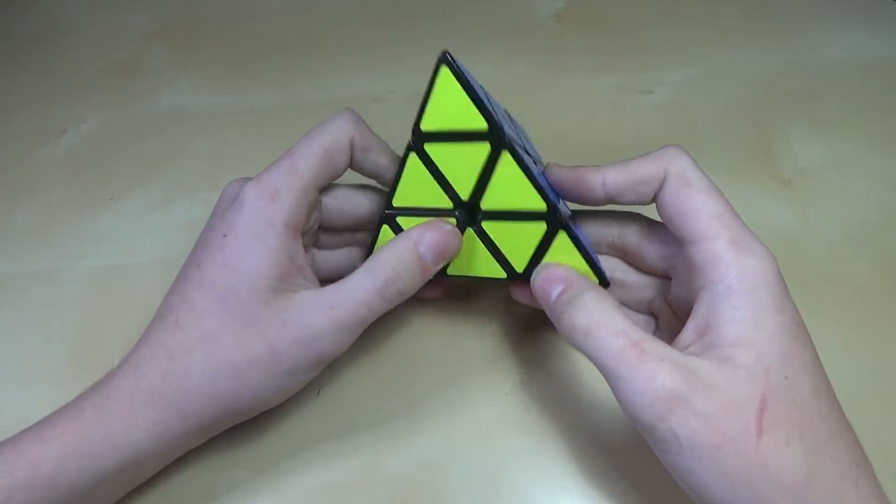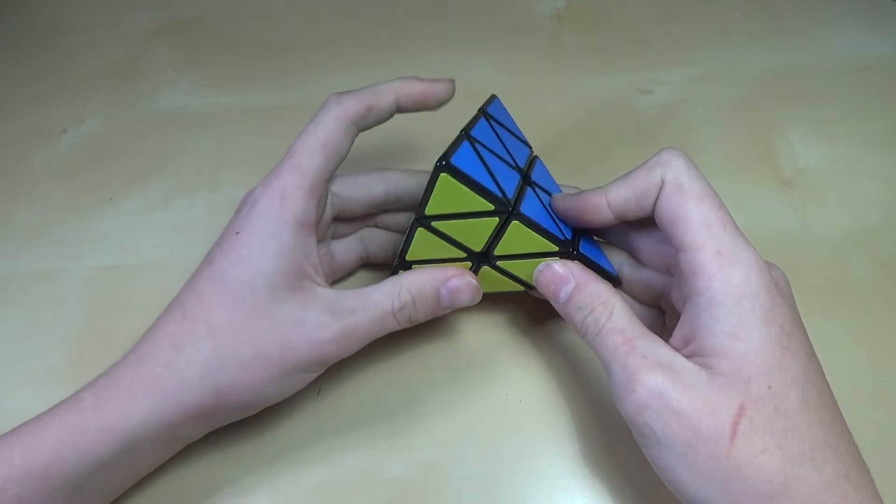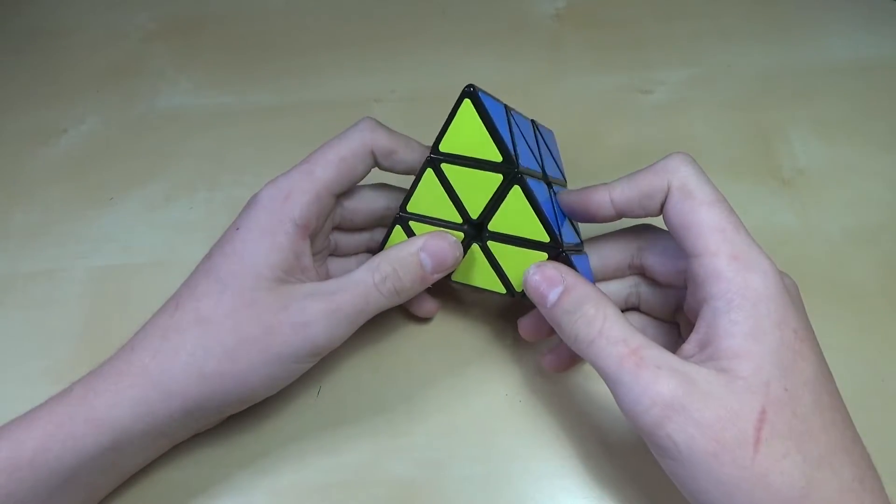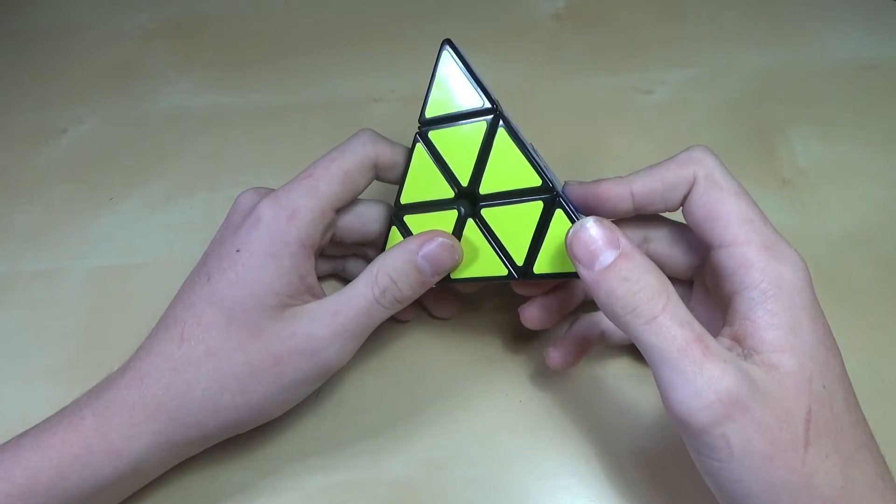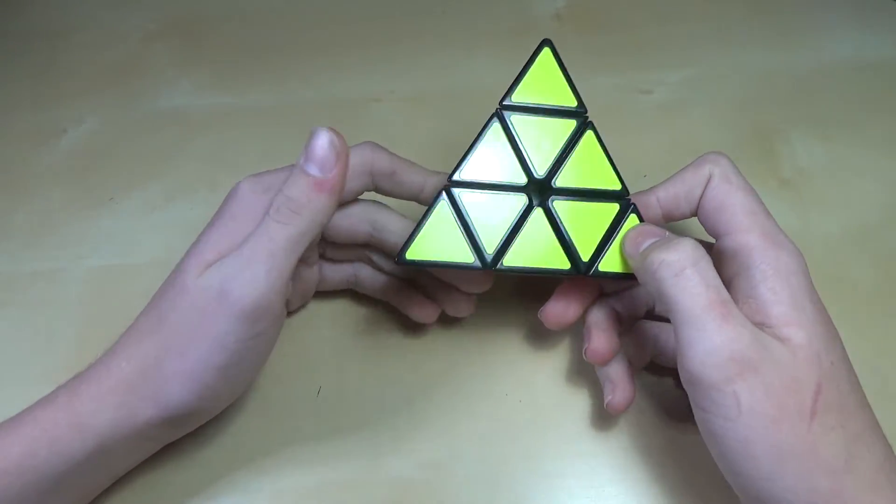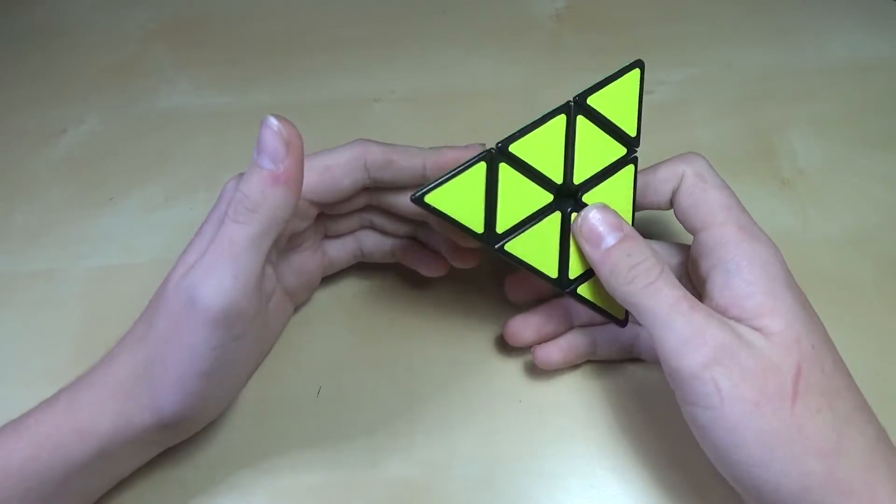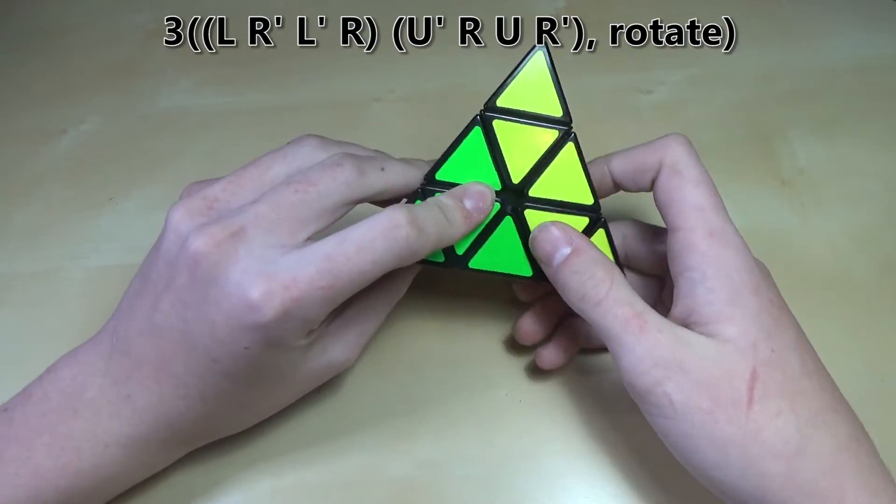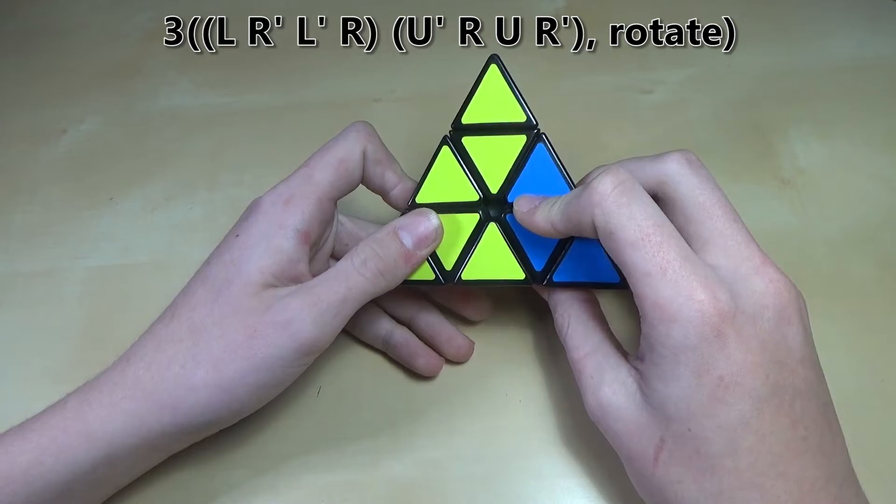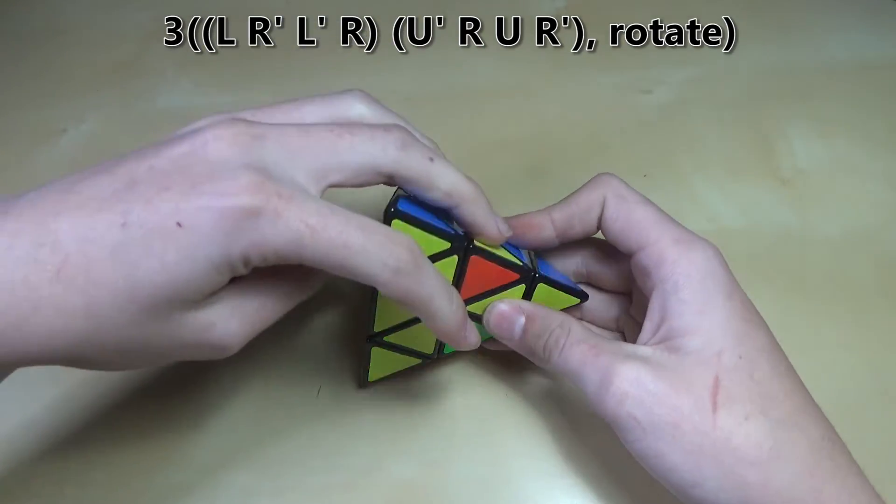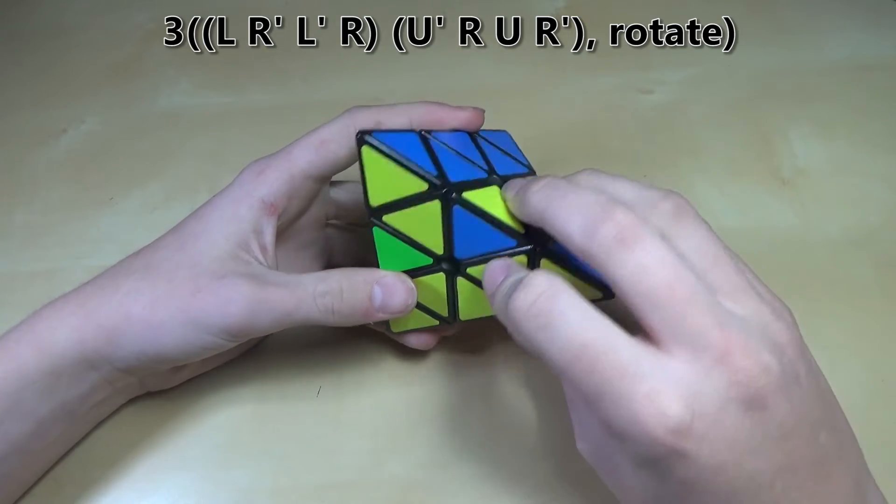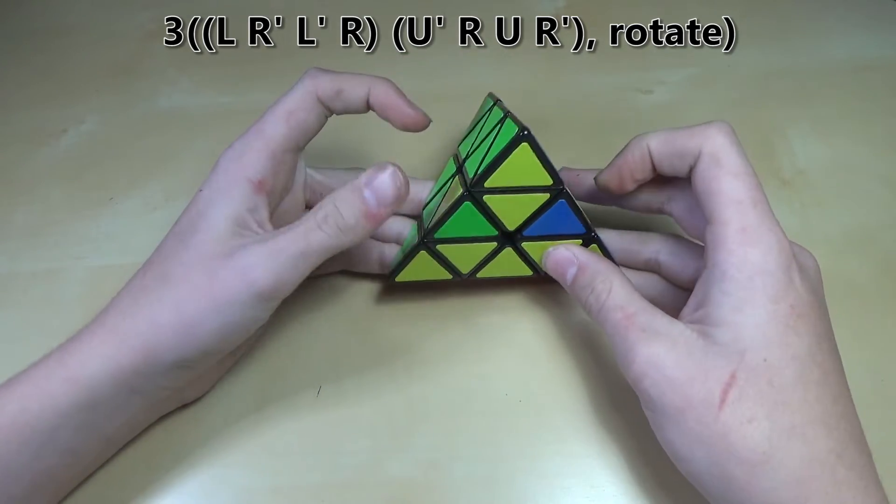So what we'll do is there's a two-flip algorithm which will flip two edges. You'll need to use this for almost any Pyraminx method. So if you know how to solve Pyraminx, you likely know this algorithm. The one that I use, there's actually a couple of different ones, is L, R', U', R, U', R'. And you see, it'll just switch these two around.